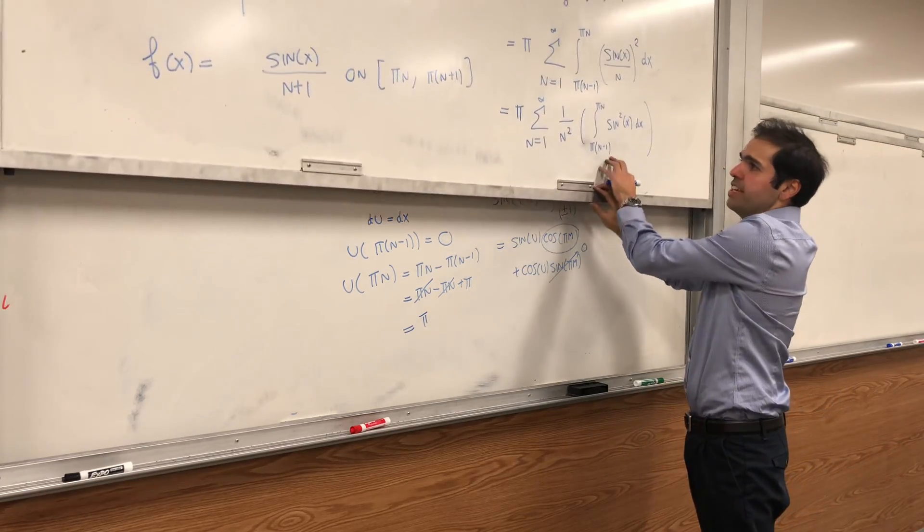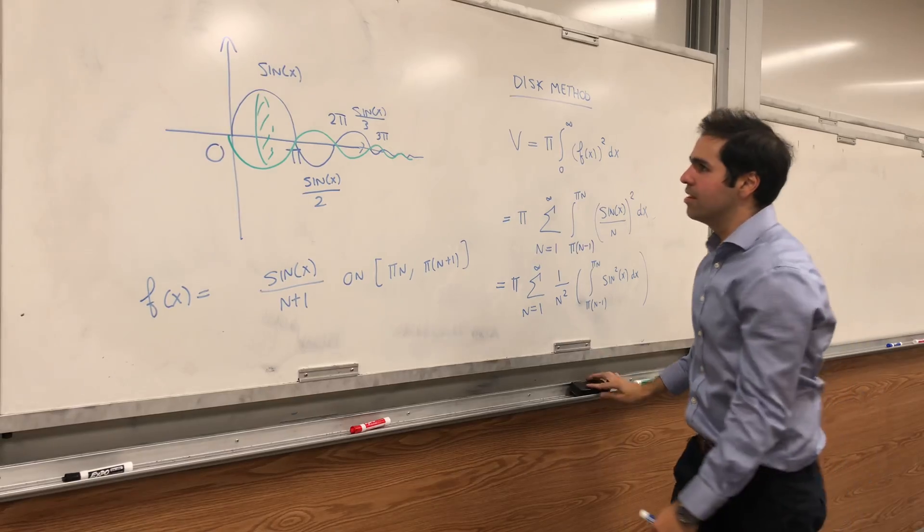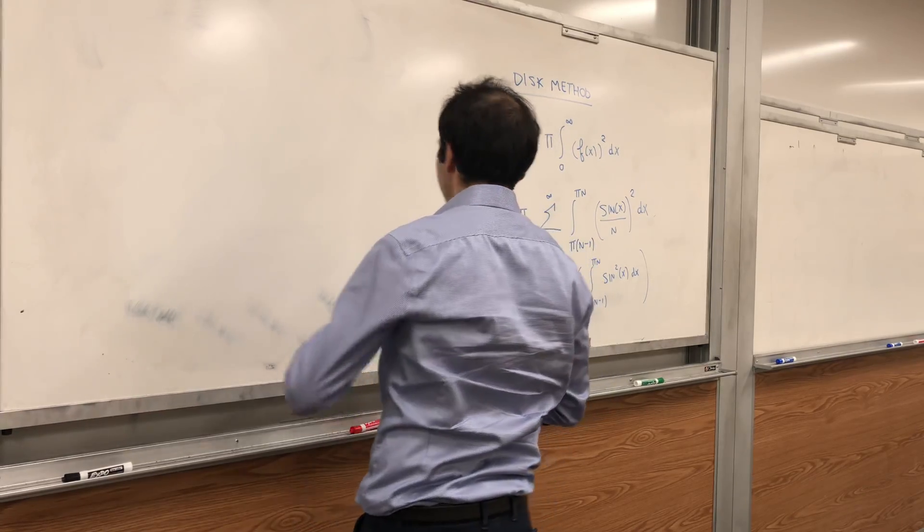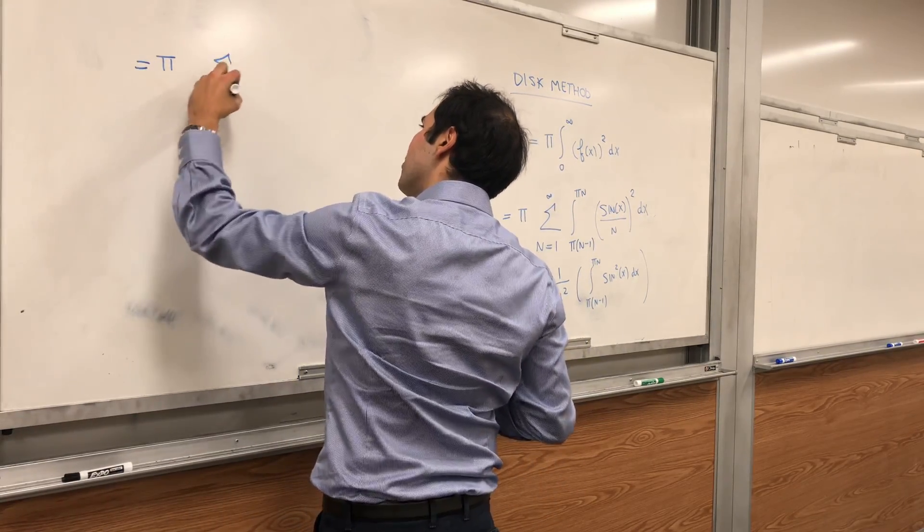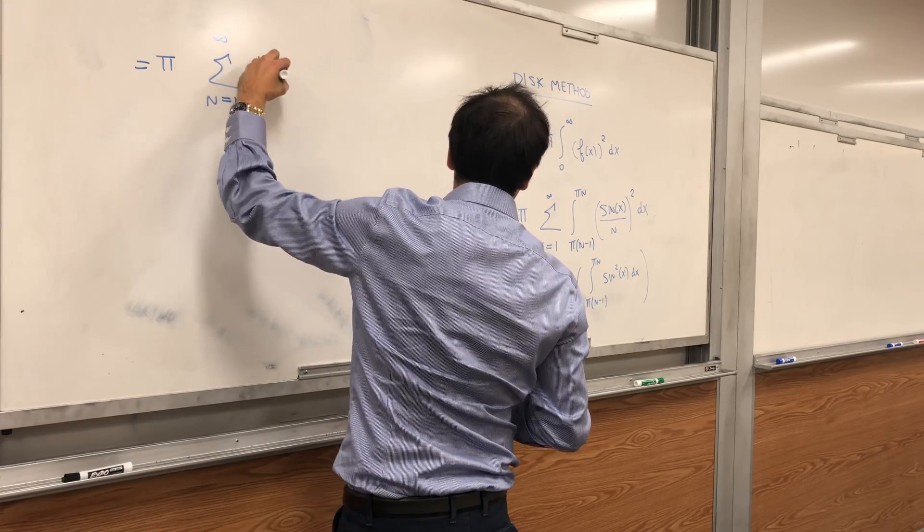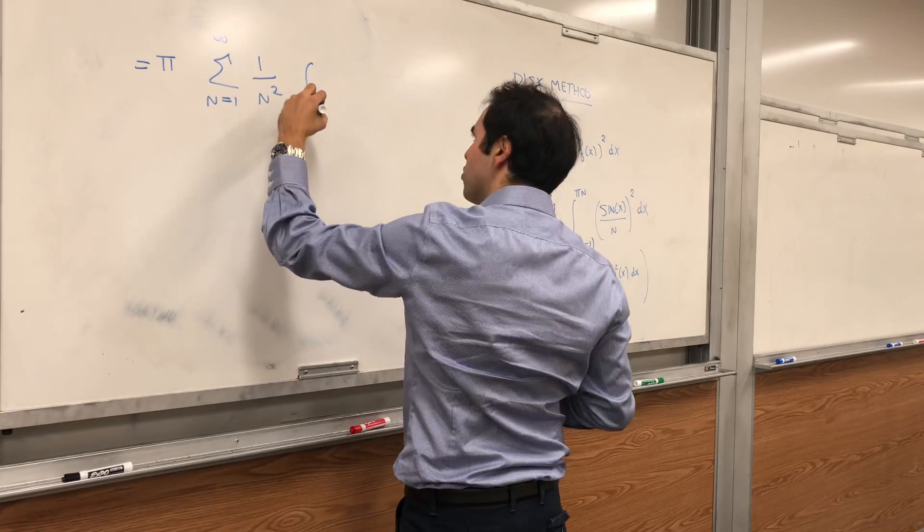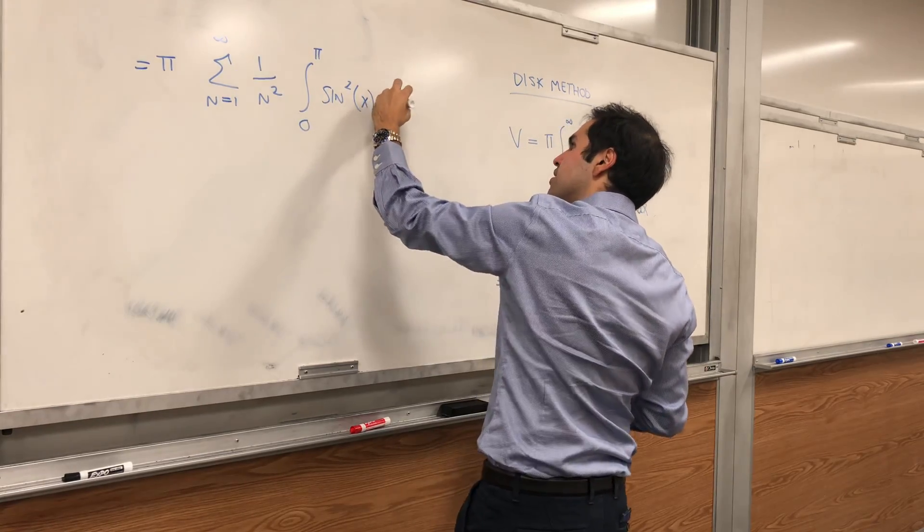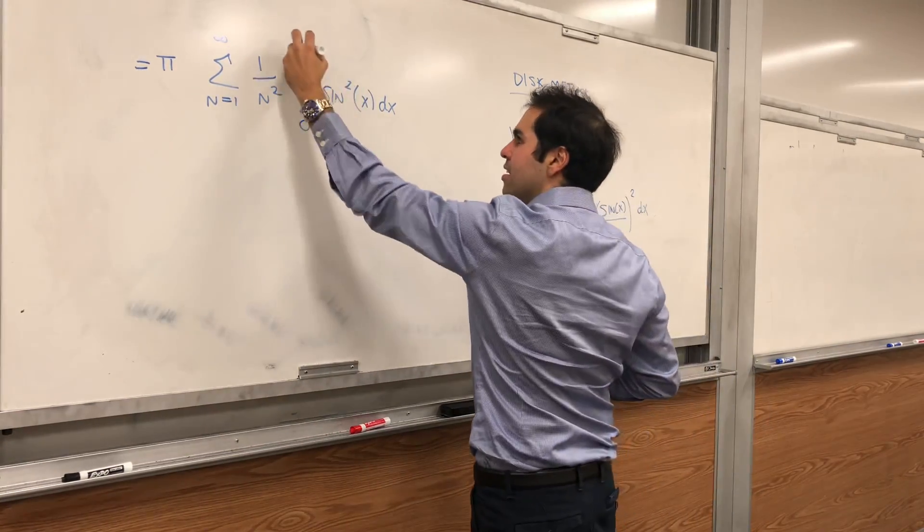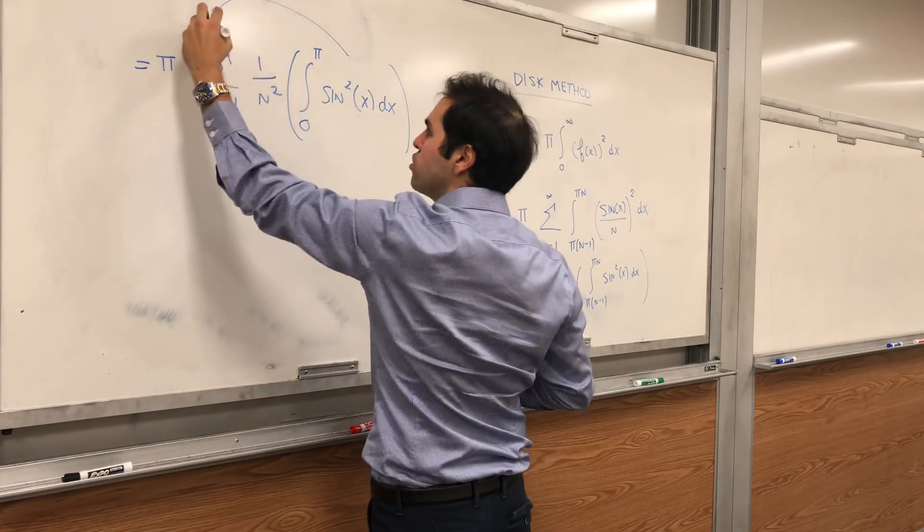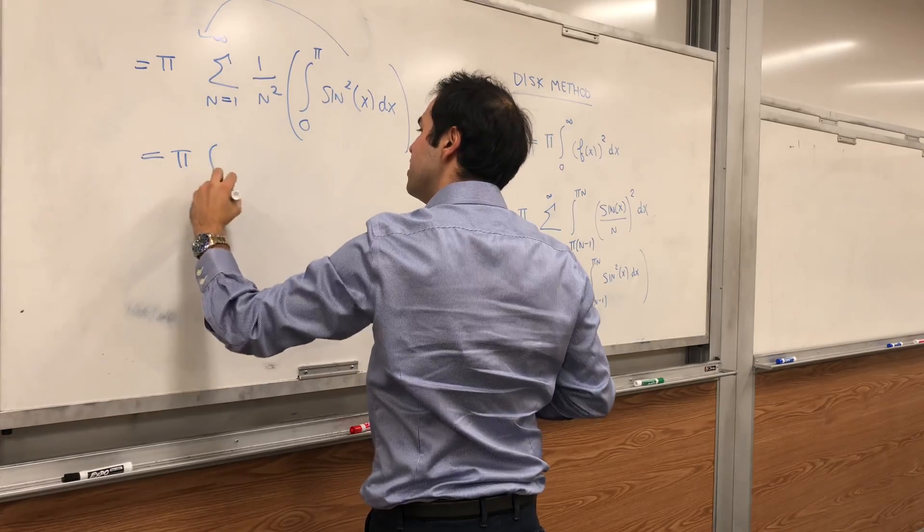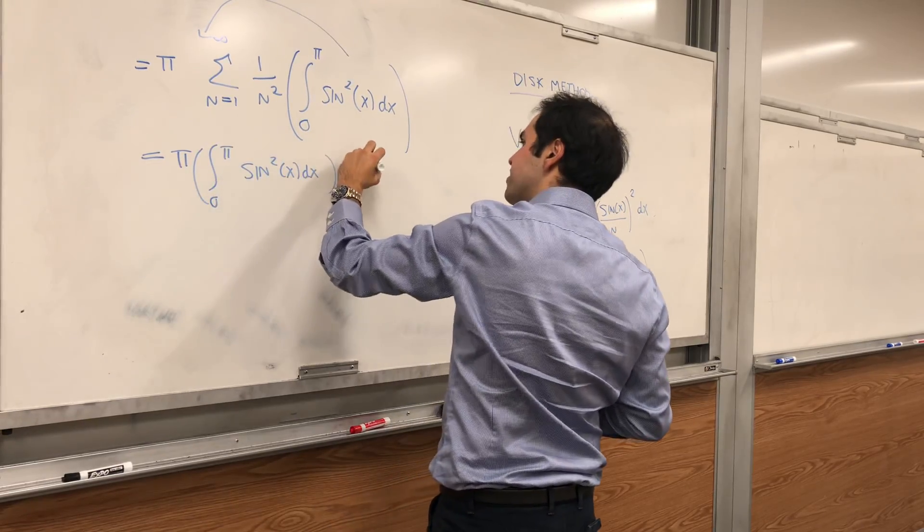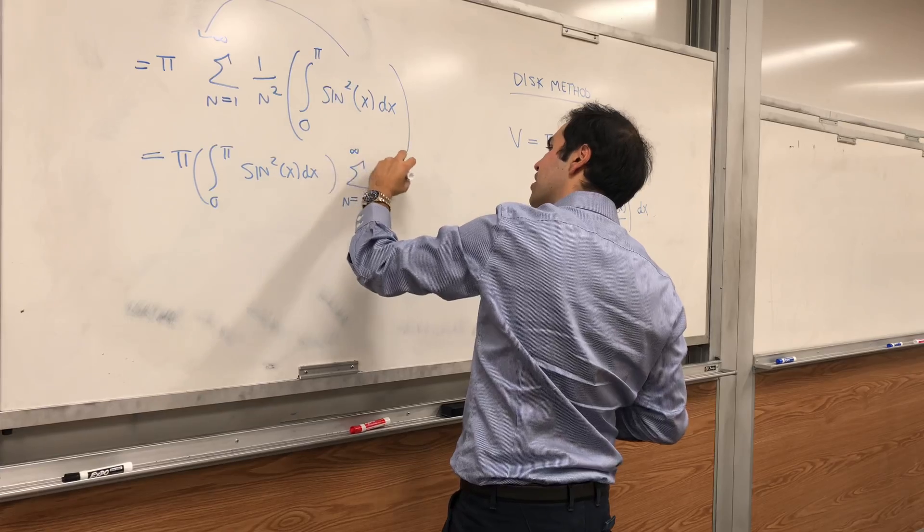So really, this integral doesn't depend on n at all. So by pretty picture, just becomes pi times the sum from n from 1 to infinity of 1 over n squared, and the integral from 0 to pi of sine squared of x dx. And the point is, this integral just pops up.